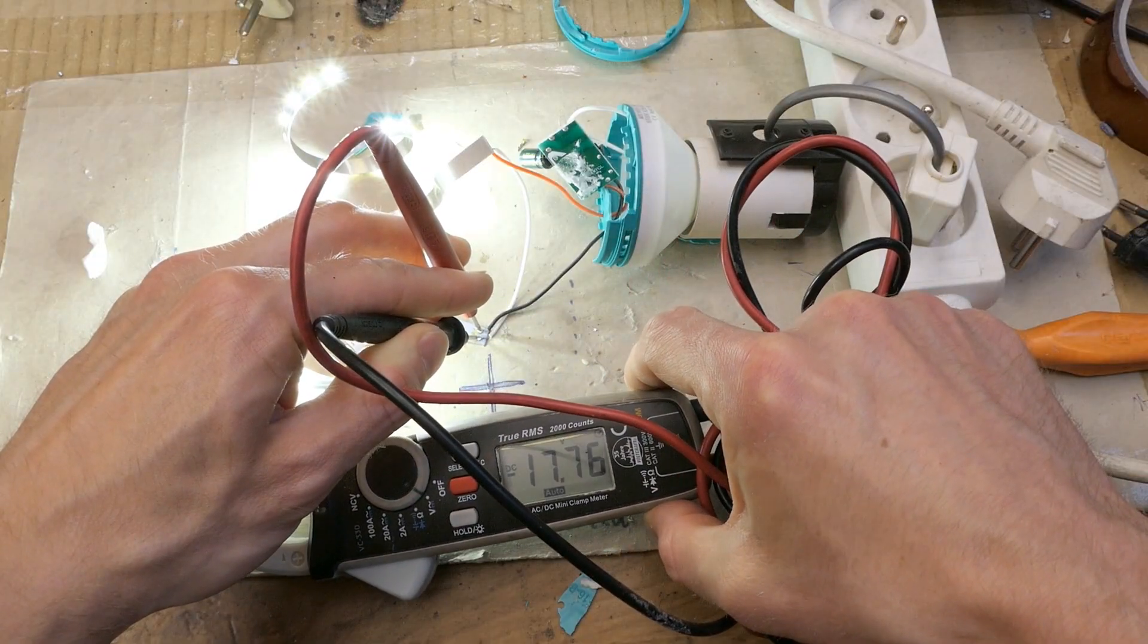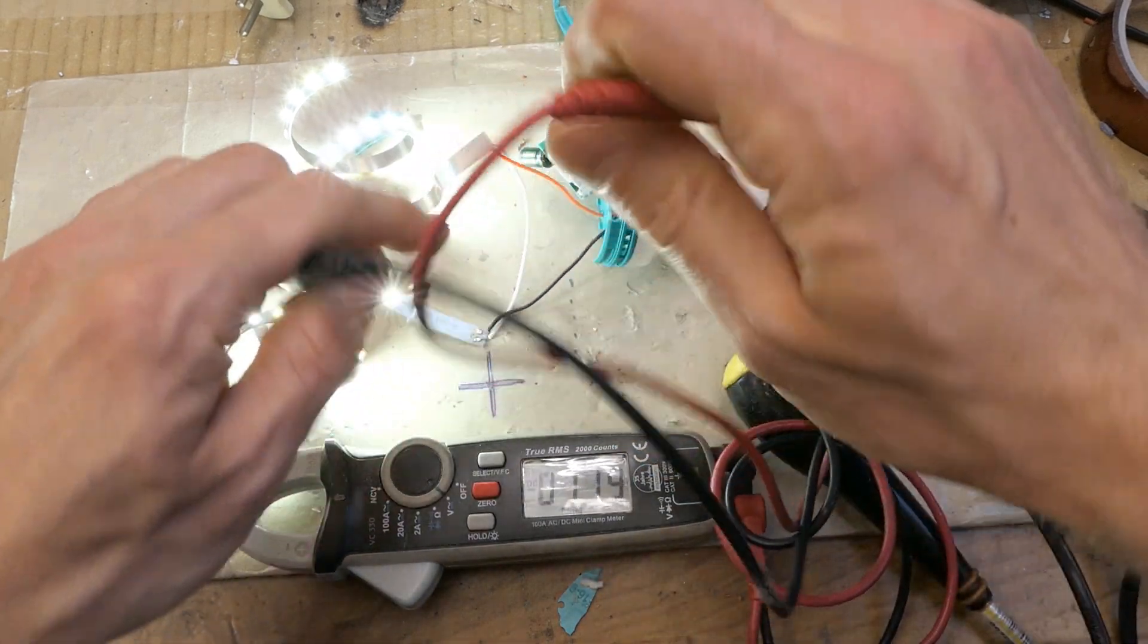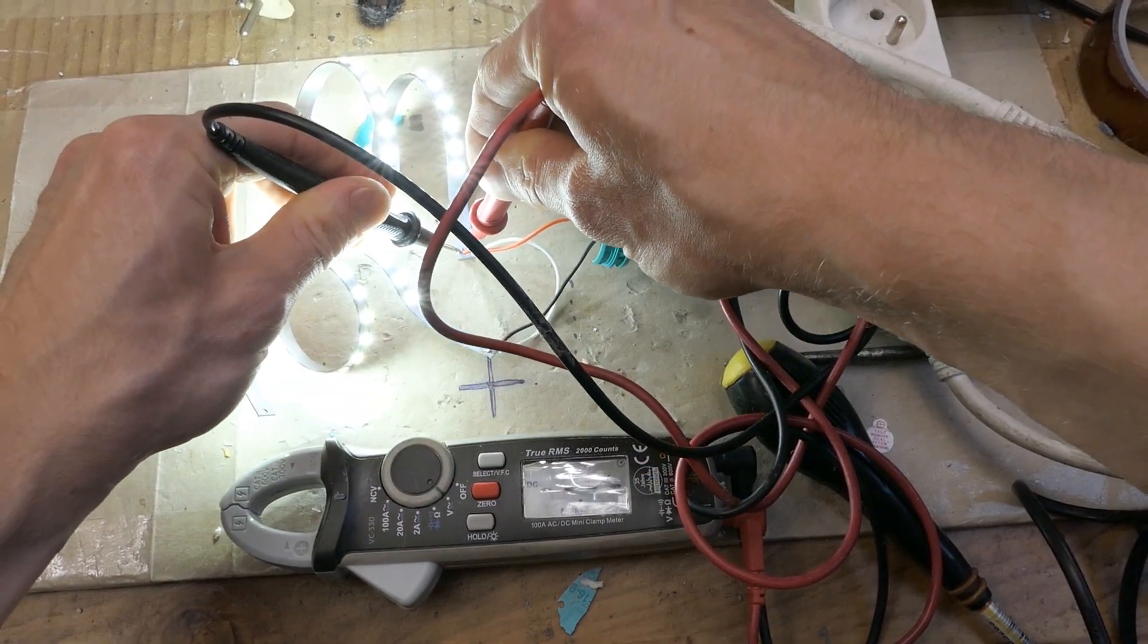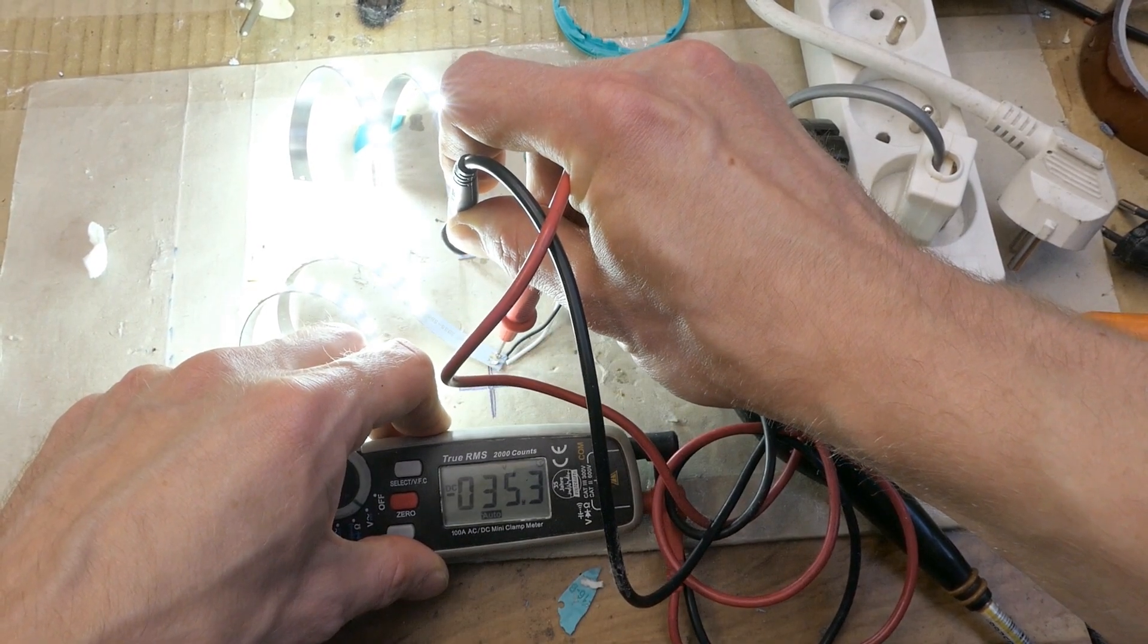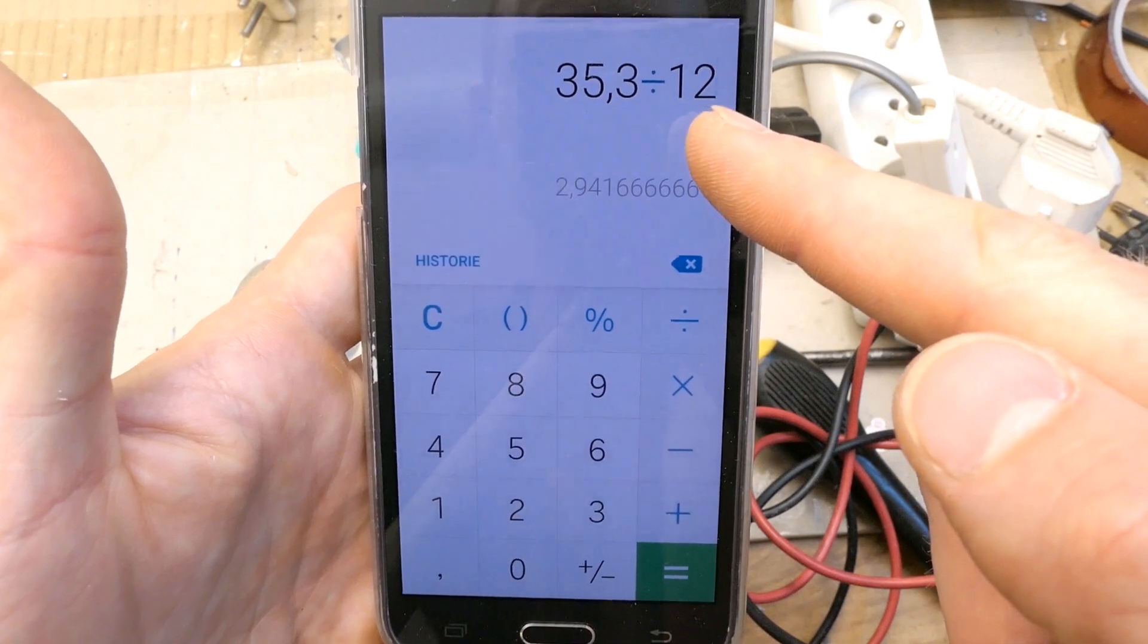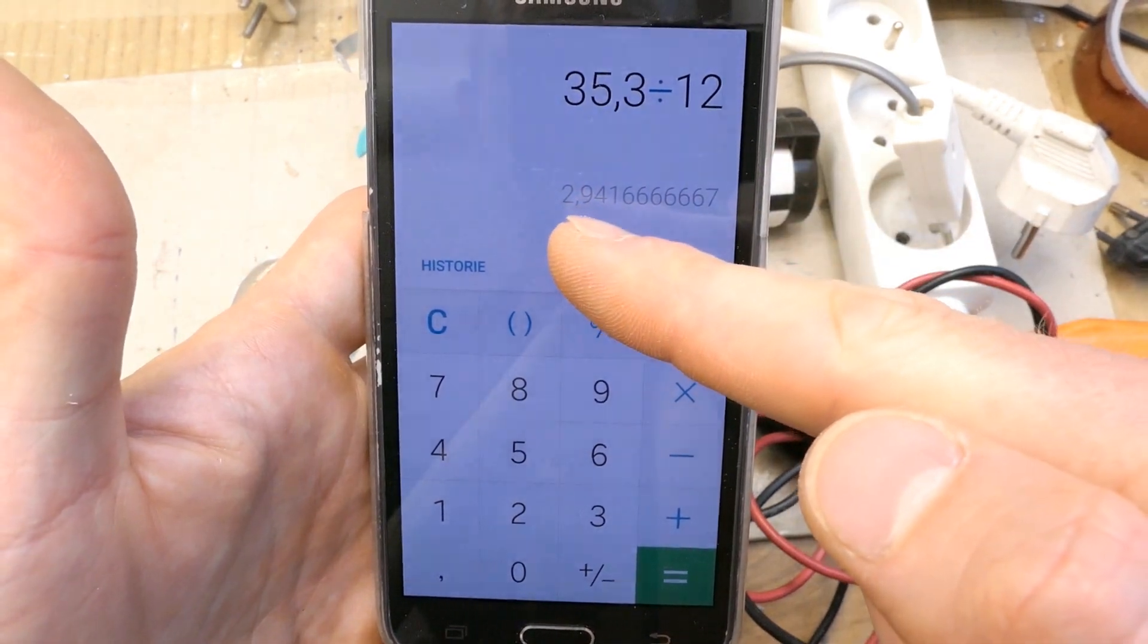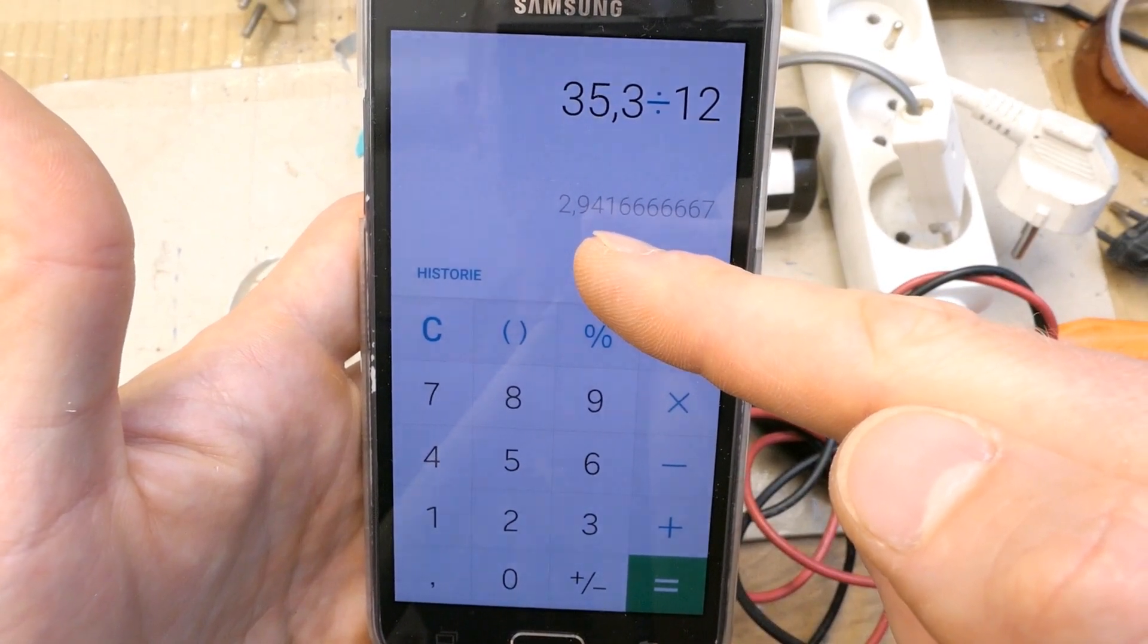And let's measure the voltage on the LEDs. One section is 17.7 volts and the other section is very close. And the total voltage is about 35 volts. Which makes sense because it's 12 LEDs in series and this is about 2.94, very close to 3 volts, which is a typical voltage drop of a white LED.